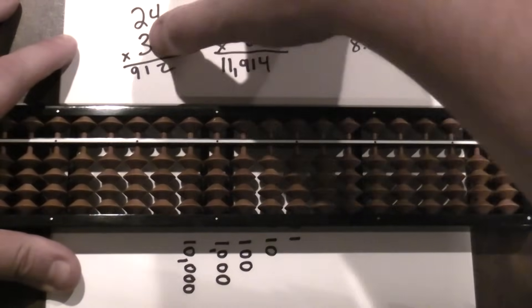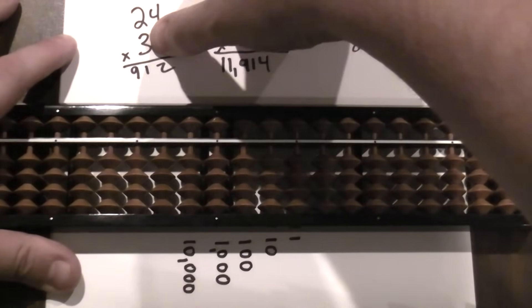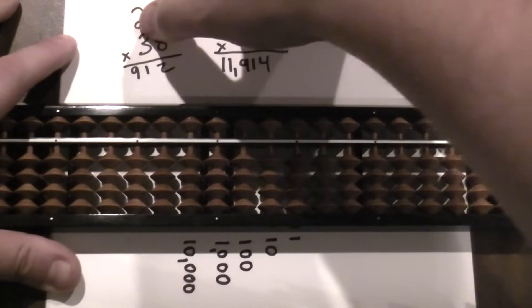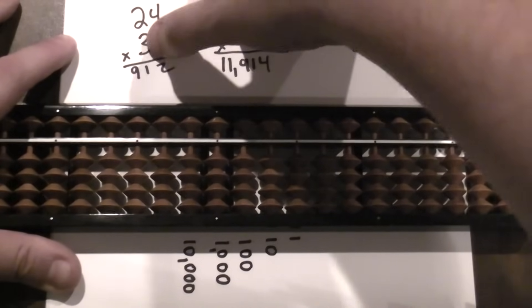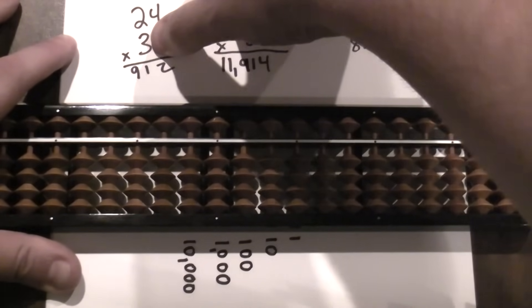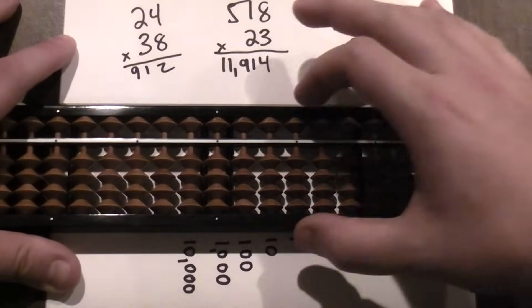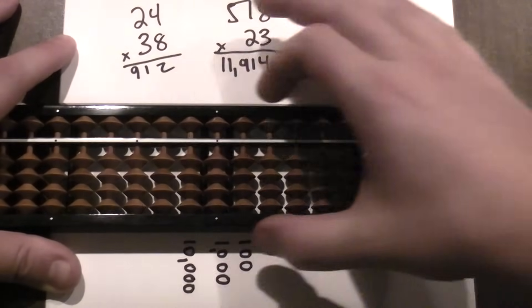Alright, so I know I'm going to start by multiplying here with the three. It's similar to the way we do multiplication here in America on pen and paper, but we start over here at the left. So I want to know which column I'm going to start on on my Soroban.